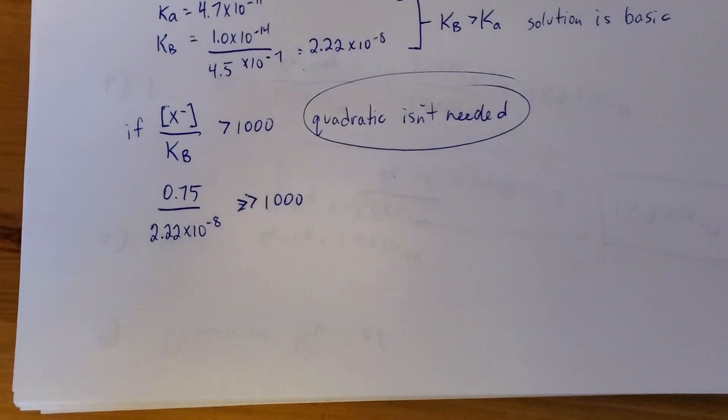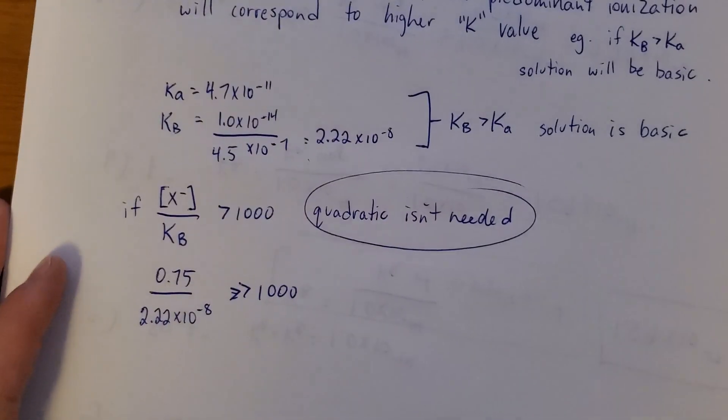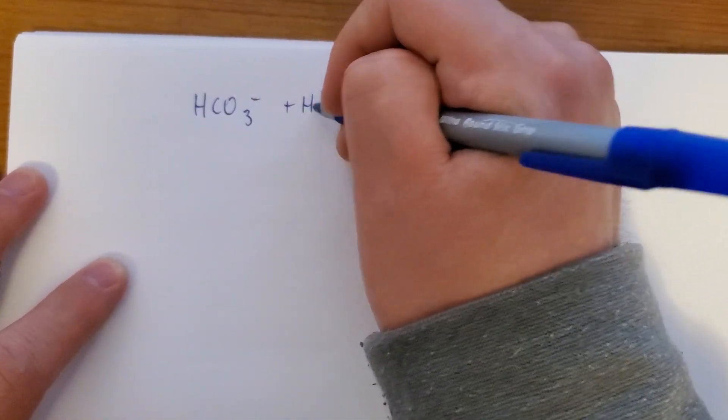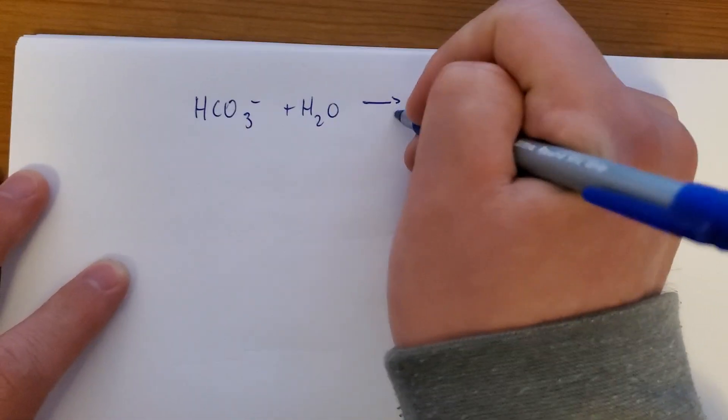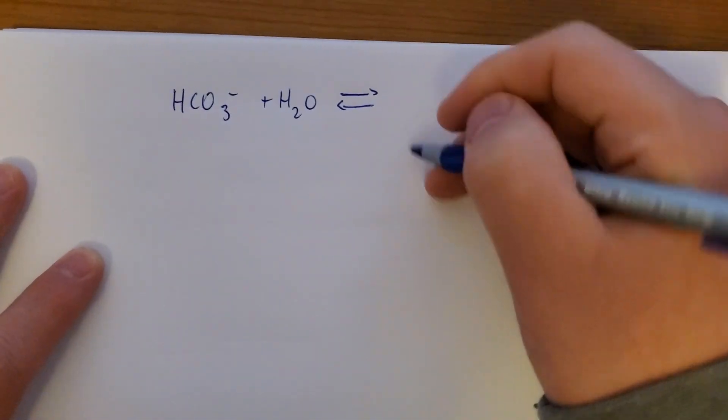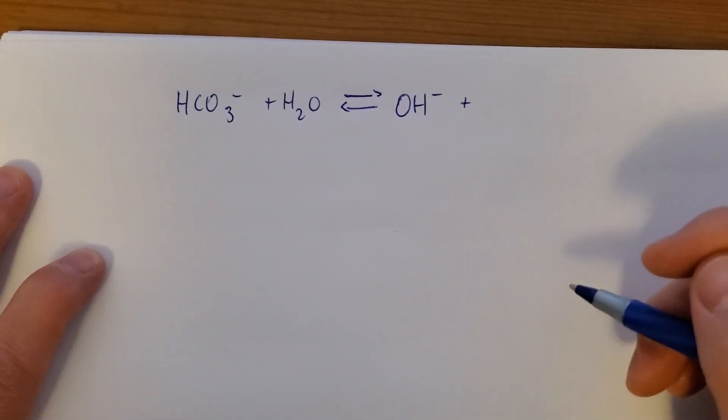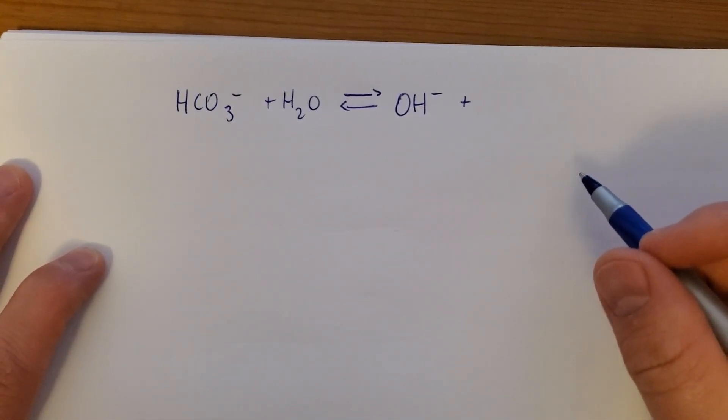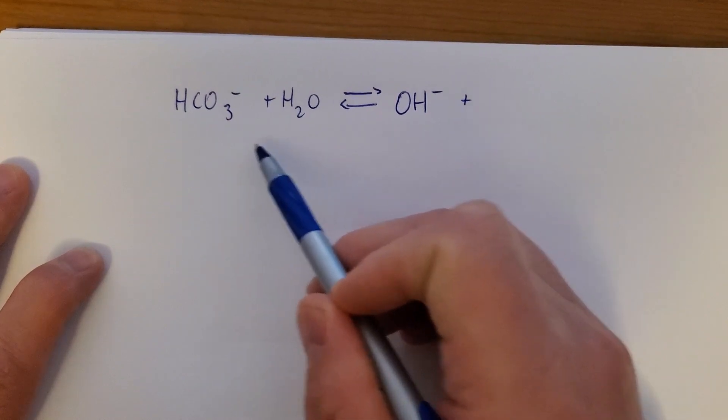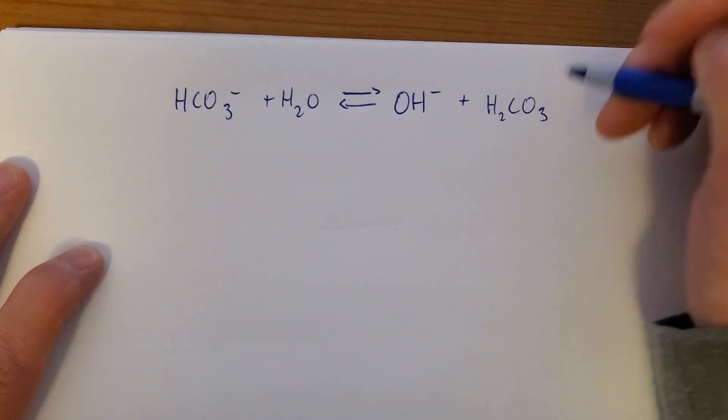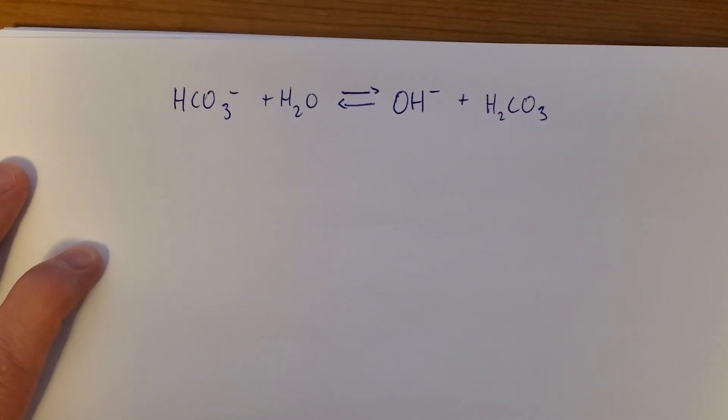So the quadratic is not needed. And we're going to go through with this question. All right, so let's write it out. HCO3, ionizing water. Remember, since KB was bigger than Ka, we'll write the basic ionization. All right, so water is donating a proton to HCO3. And this is its conjugate acid.